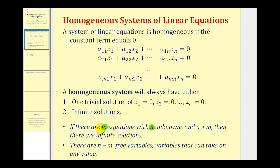If there are m equations with n unknowns and n is greater than m, meaning the number of variables is greater than the number of equations, then there are infinite solutions. There will also be n minus m free variables — the number of variables minus the number of equations tells us how many free variables we have, which are the variables that can take on any value and we'll assign a parameter for them.